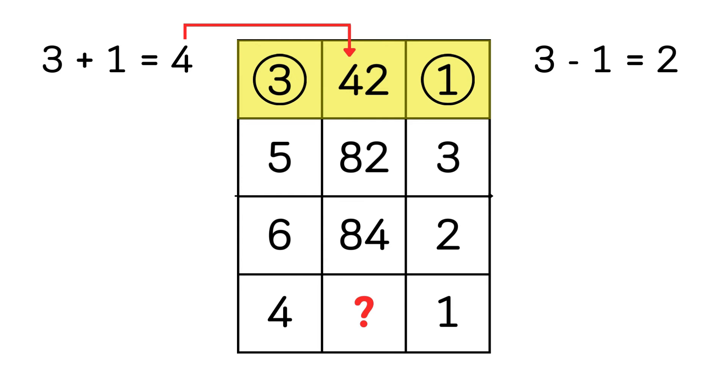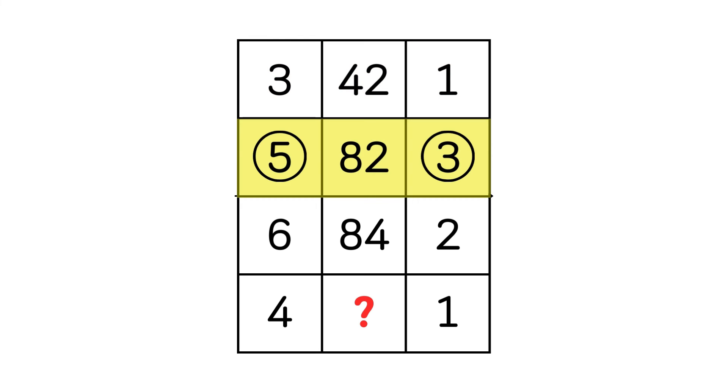So I'm going to check the second row as well. Five plus three equals to eight, five minus three equals to two. So the pattern works.